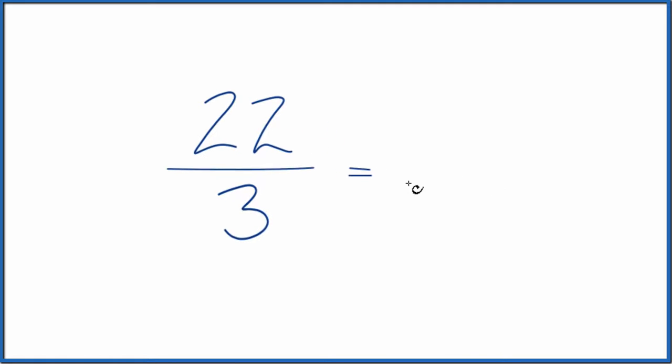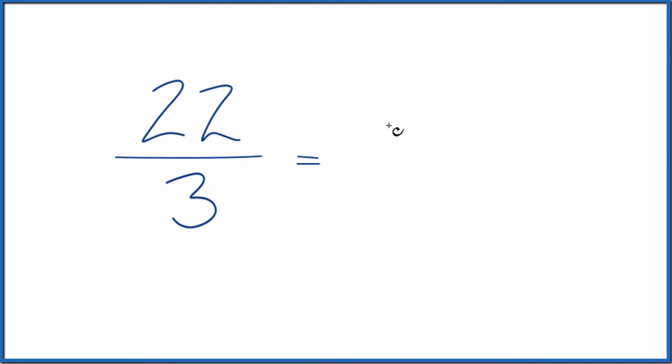3 goes into 22. 3 times 7 is 21. So 7 times, 22 minus 21, we have a remainder of 1. So the fraction 22 thirds is equal to 7 remainder 1.